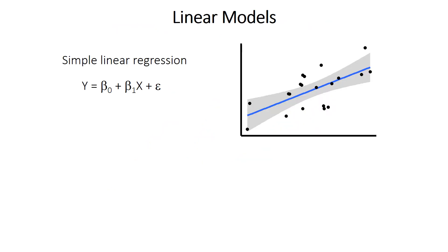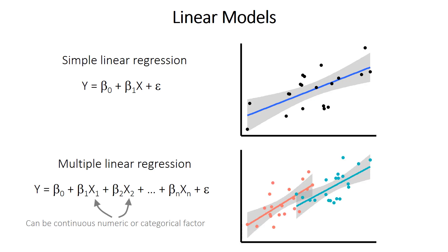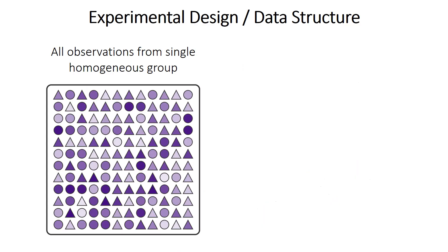The linear model, in its basic sense, is a general category, but the most familiar case would likely be linear regression, where a dependent variable y can be modeled by an independent variable x with coefficients indicating a slope and an intercept. The linear model can include more than one independent predictor variable — multiple terms — which could be continuous numeric or categorical factors, each with their own coefficient beta. Linear models such as those are best suited when all of the observations come from a single, homogeneous group without any underlying structure.